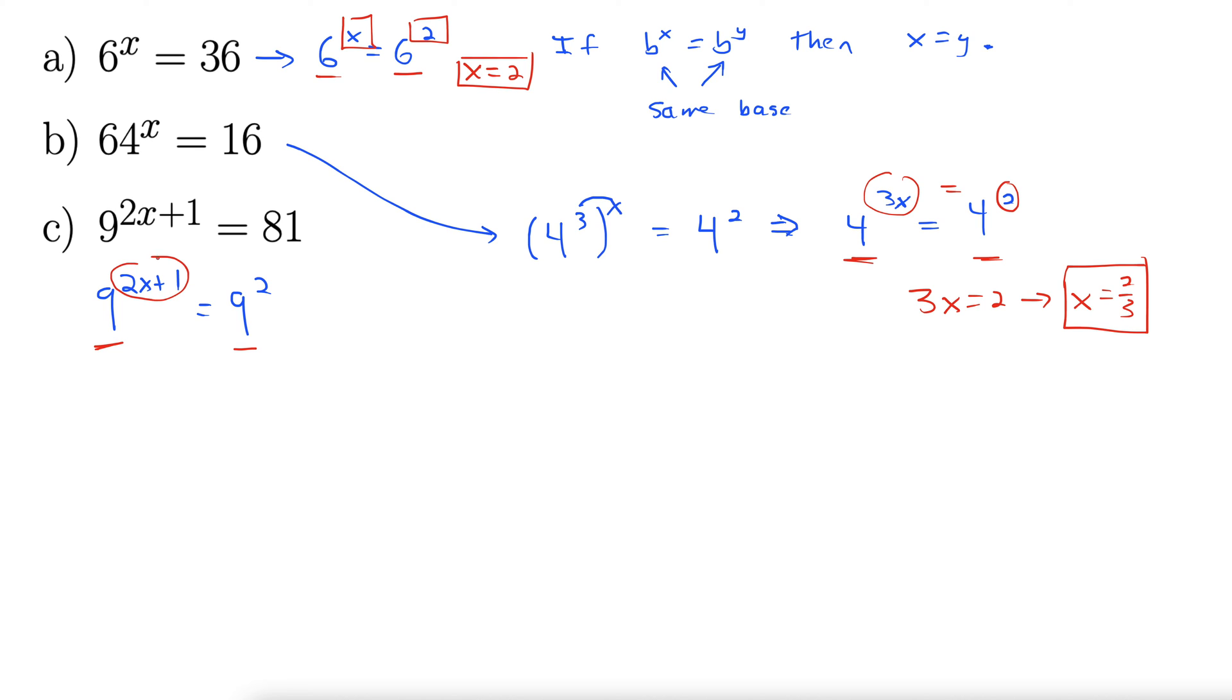Once we have that, we can just focus on the exponents and set those equal. So that gives us 2x plus 1 equals 2. And we solve from there. Subtracting 1 from both sides gives us 2x equals 1. Dividing by 2, x equals 1 half.